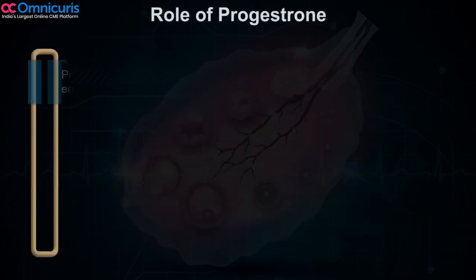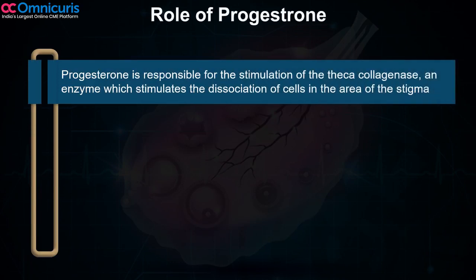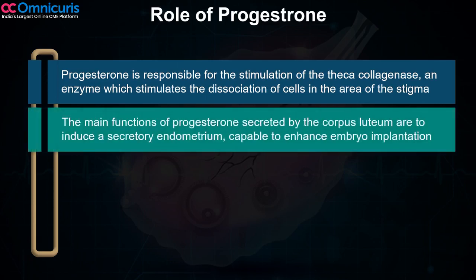The role of progesterone is that it is responsible for the stimulation of the theca collagenase, an enzyme which stimulates the dissociation of the cells in the area of the stigma. The main functions of progesterone secreted by the corpus luteum are to induce a secretory endometrium capable of enhancing embryo implantation.